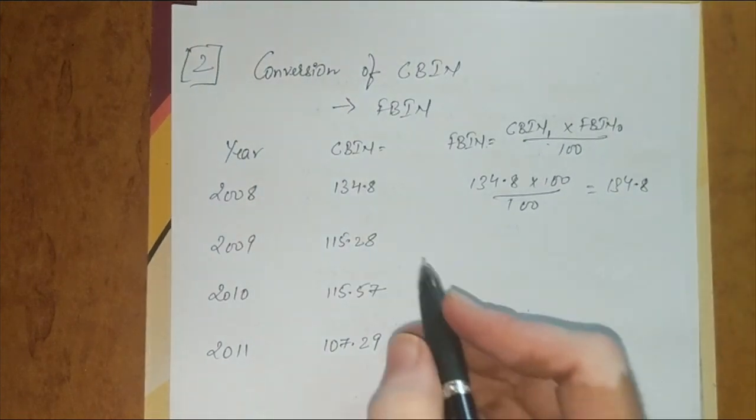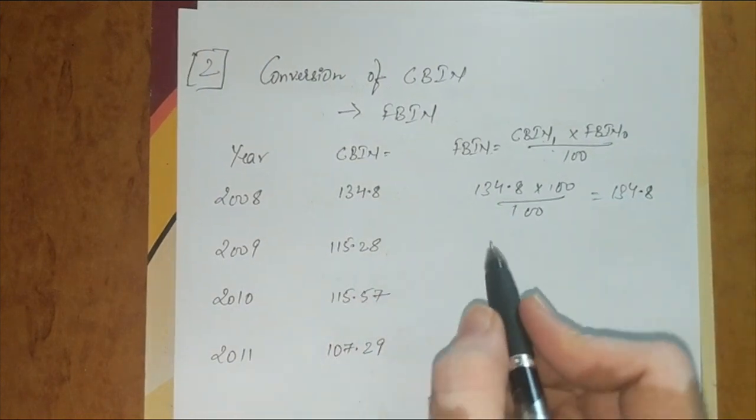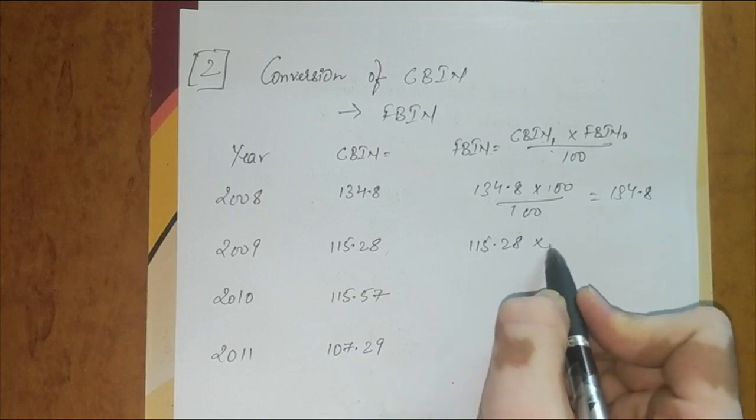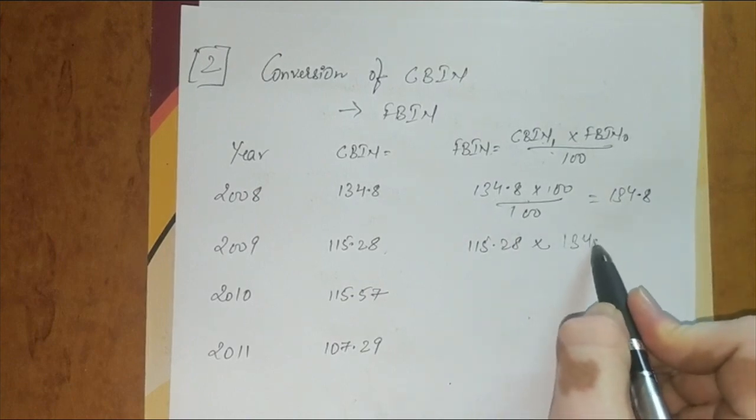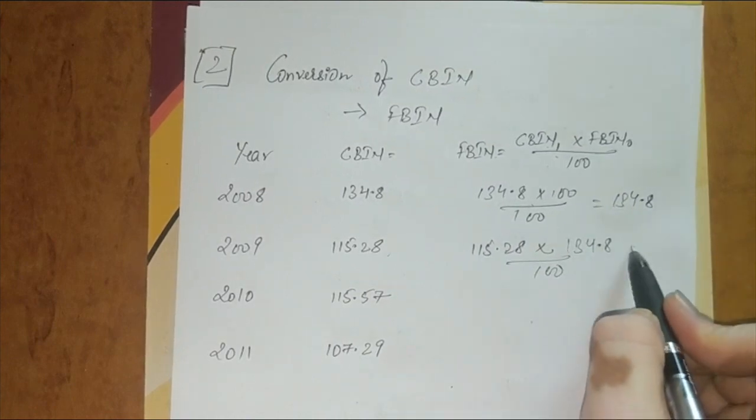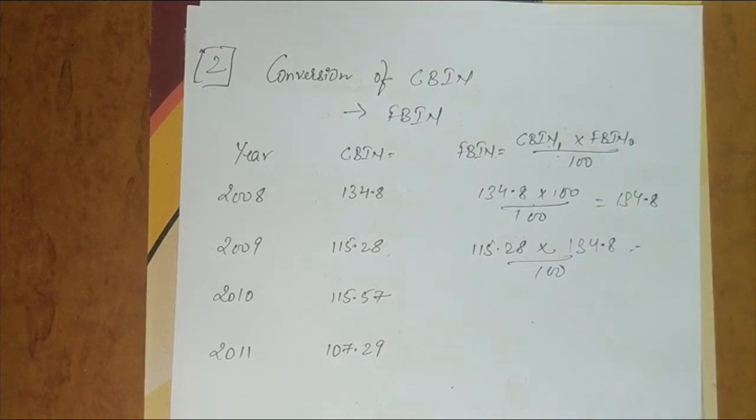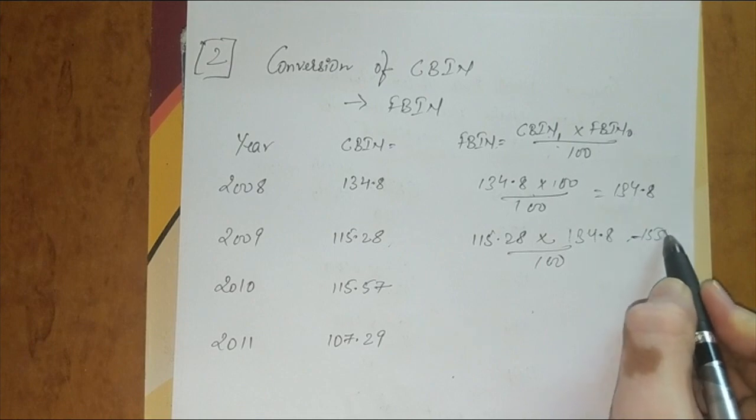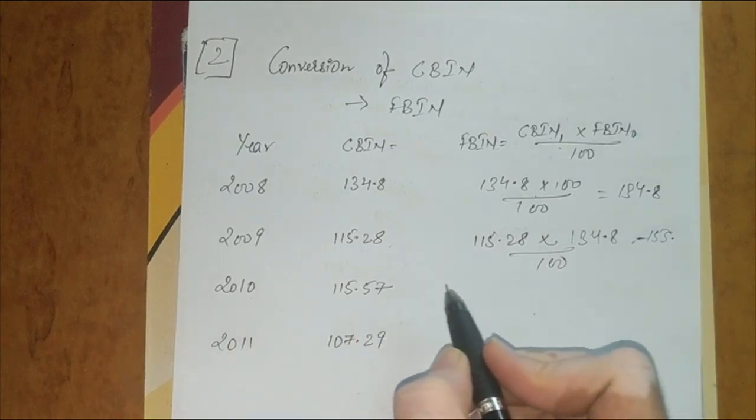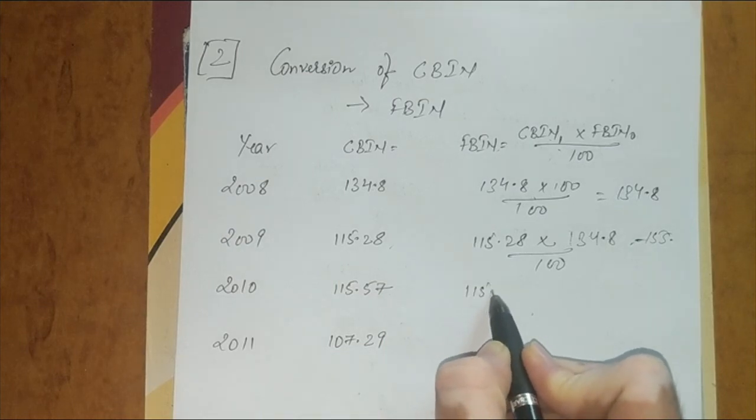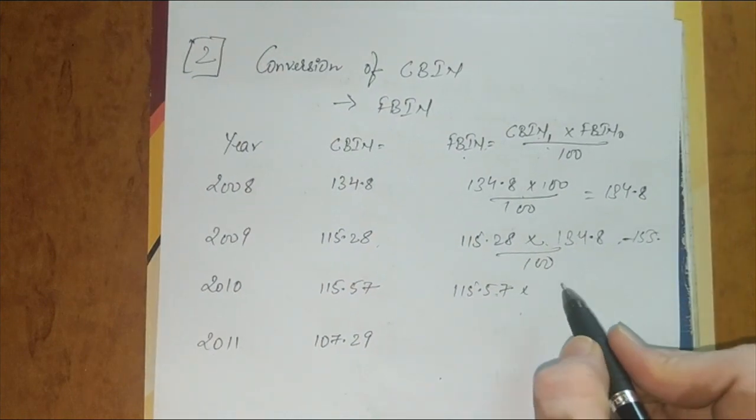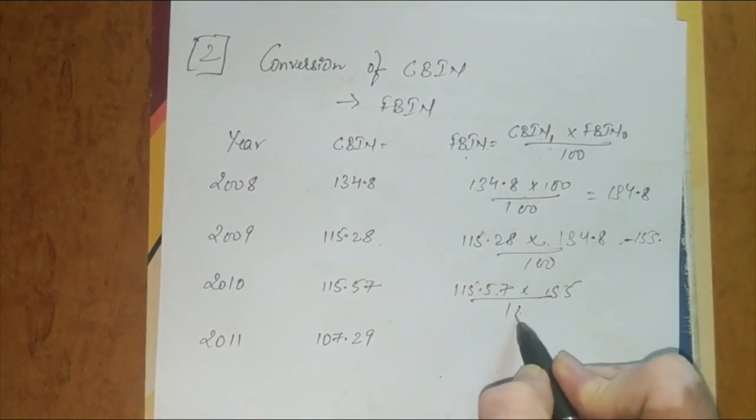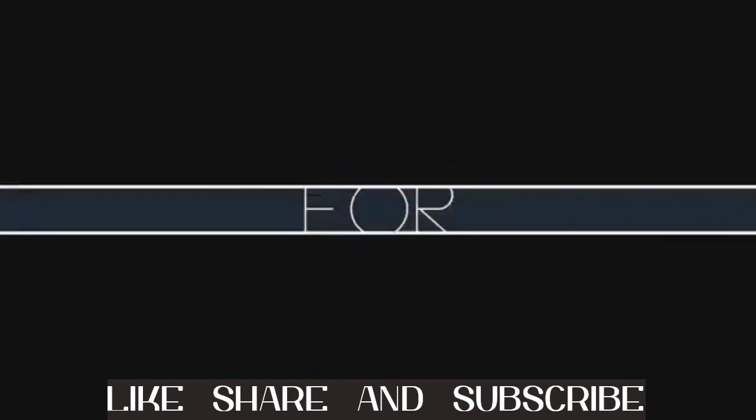Next, 2009—the formula is CBN of current year, which is 115.28, into FBN of previous year, which is 134.8, divided by 100, that comes to 155 point something. Next, 2010—same thing: current year CBN is 115.57 into FBN of previous year, which is 155, divided by 100. And last, the same.